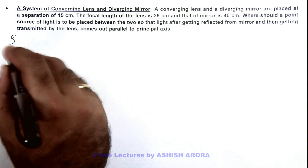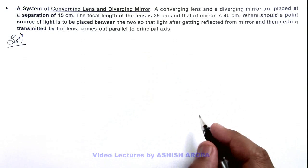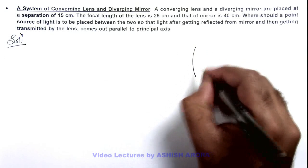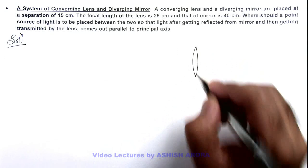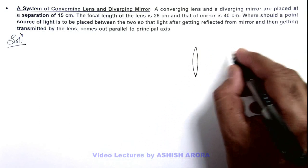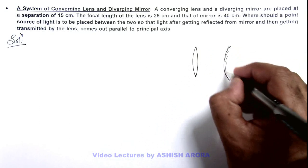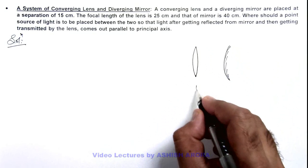Here we can understand it better with the help of a ray diagram. We are given that there exists a converging lens and a diverging mirror, and the separation between the two is given as 15 centimeters.